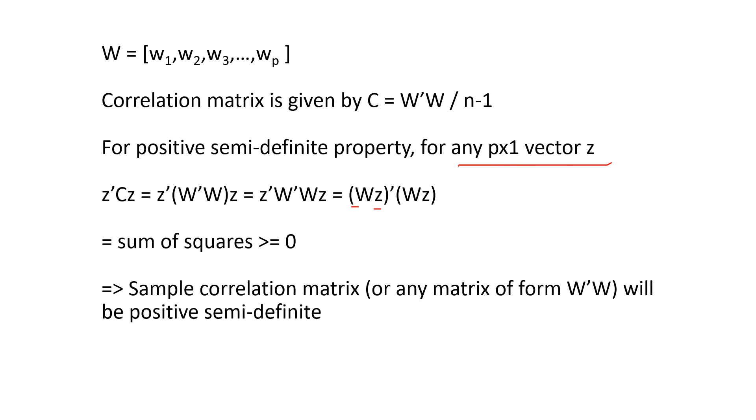Now consider any p by 1 vector Z. We calculate the quadratic form Z transpose CZ. And we can solve this to write it in terms of the matrix W as WZ transpose times WZ.